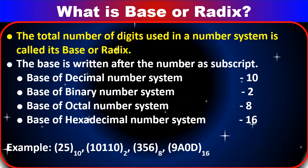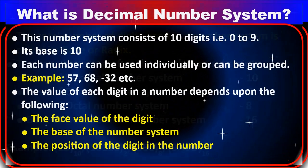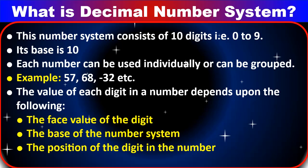The base is written after the number as a subscript. You have to remember: the base of the decimal number system is 10, the base of the binary number system is 2, the base of the octal number system is 8, and the base of the hexadecimal number system is 16. For example: (25)₁₀, (10110)₂, (356)₈, and (9A0D)₁₆ — the subscript number is known as the base.